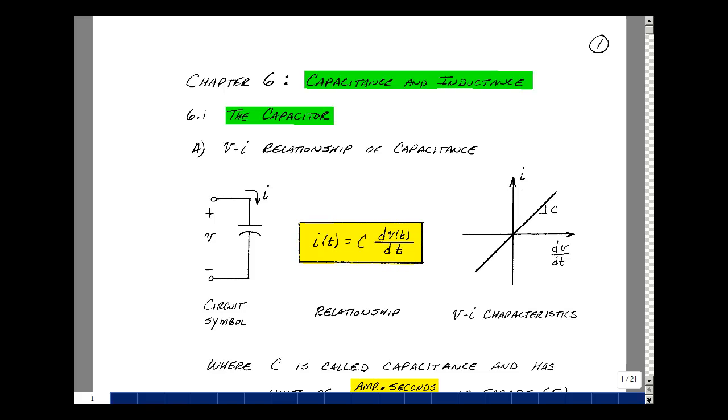If you graph current on the y-axis, but now the derivative of voltage on the x-axis, you would again get a straight line relationship or a linear relationship.